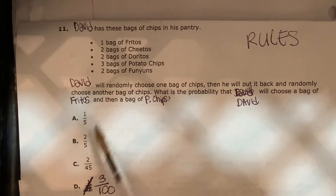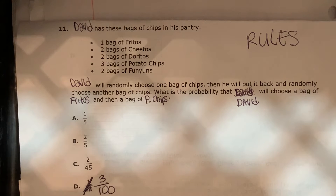A, one-fifth. B, two-fifths. C, two-forty-fifths. Or D, three out of one hundred.